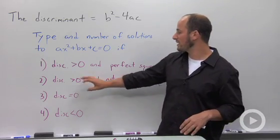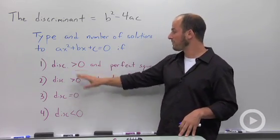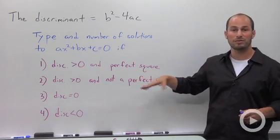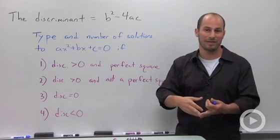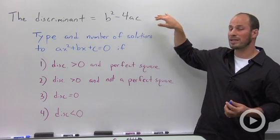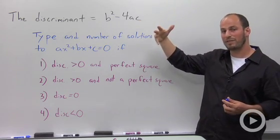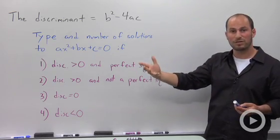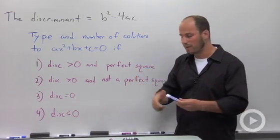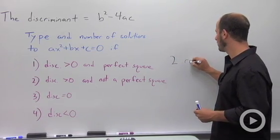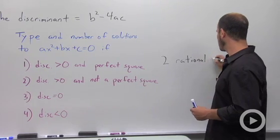The discriminant can be different values. First, it could be greater than zero and a perfect square - like 16, 25, any number greater than zero and a perfect square. The discriminant is what's underneath the square root, so if it's a perfect square, you can take the square root of it and the square root is gone from our quadratic formula. What that tells us is we have two rational solutions.